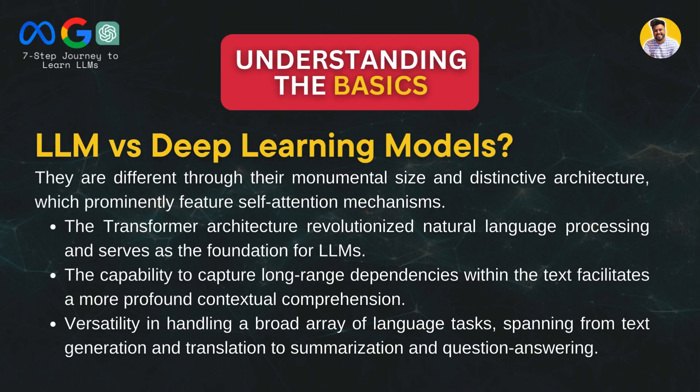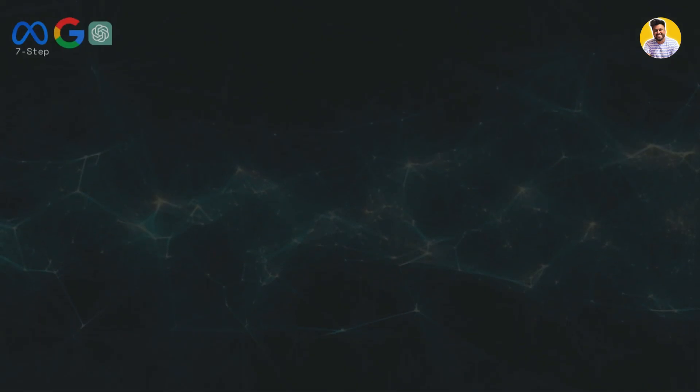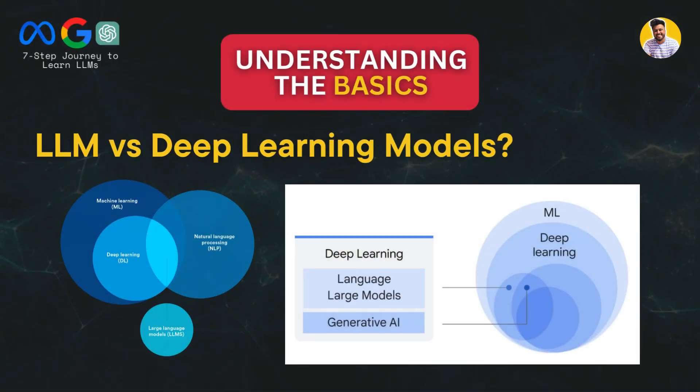Why are large language models so different from deep learning models? They differ on the basis of size and distinctive architecture. If you add the self-attention mechanism to the transformer and train it on a large corpus of textual data, it becomes a large language model. With self-attention, it can capture long-range dependencies in text and perform tasks from text generation to summarization, machine translation, and question answering.